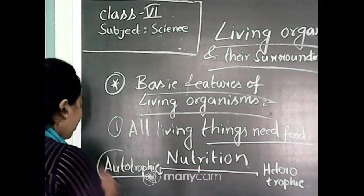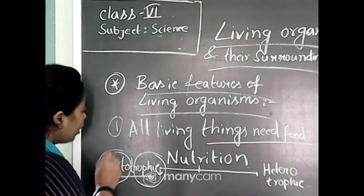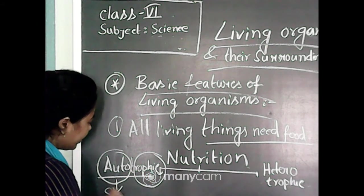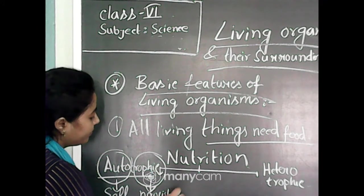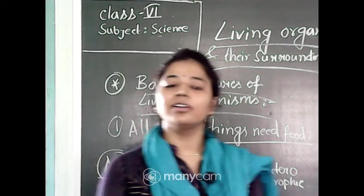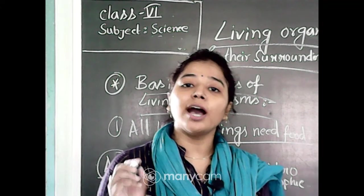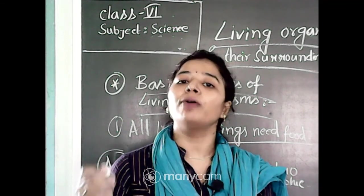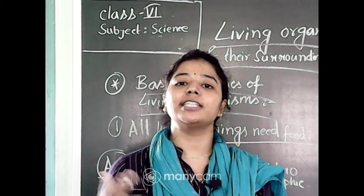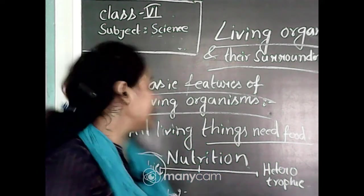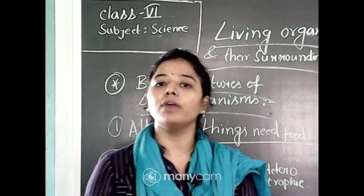In autotrophic mode of nutrition, we can divide the word into two parts: 'auto' and 'trophic.' Auto means self and trophic means nourishment. So organisms that can make or synthesize their own food are called autotrophs, and their mode of nutrition is known as autotrophic mode of nutrition.